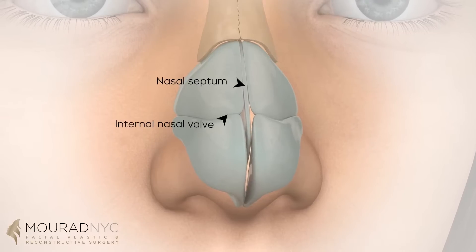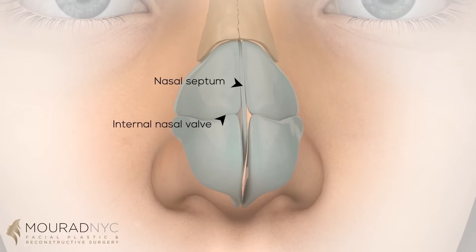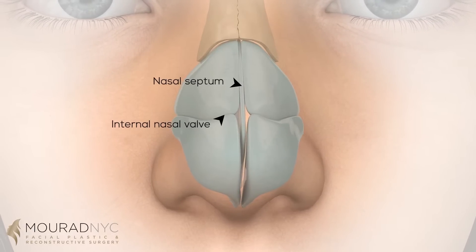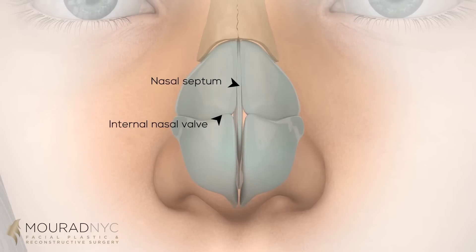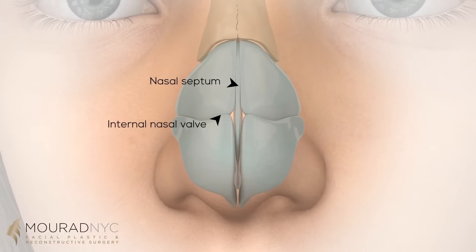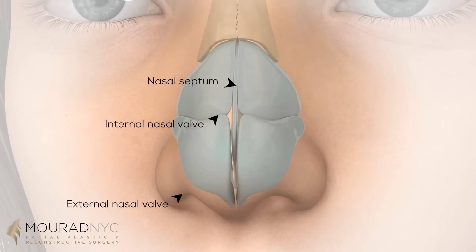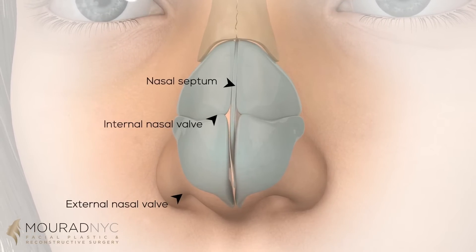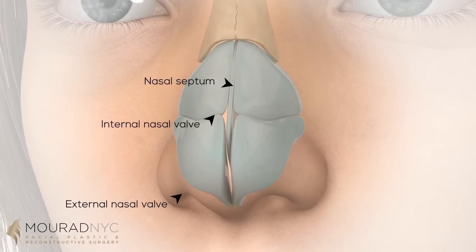The internal nasal valve is comprised of the area between the septum and the upper lateral cartilages. The external nasal valve is comprised of the lower lateral cartilages in the nasal tip.